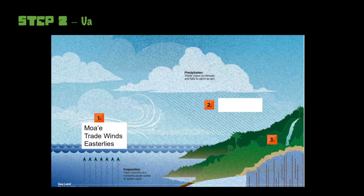Step two is Ua, or rain. As the Moa'e push this moist air over our high cool mountains, clouds form. The water vapor condenses — or goes back from gas to liquid — and falls to the earth as rain. Rain brings us all of our fresh water here in Hawaii.